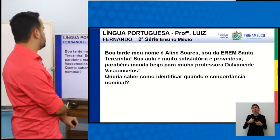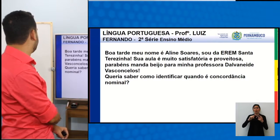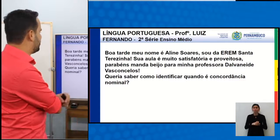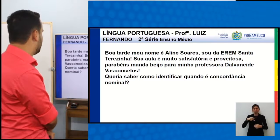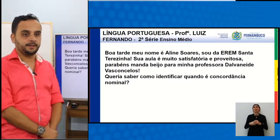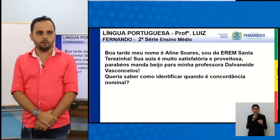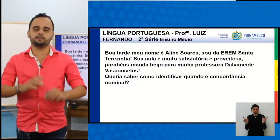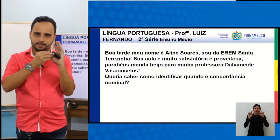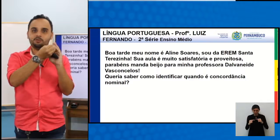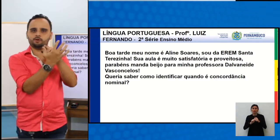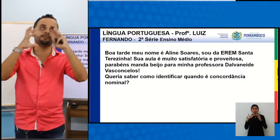Aline Soares, da Eren Santa Terezinha — sua aula é muito satisfatória e proveitosa — quer saber como identificar quando é concordância nominal. A concordância nominal se manifesta quando todas as classes gramaticais nominais concordam com o substantivo: adjetivo, pronome, numeral e artigo — todas concordam com o nome, com o substantivo. Essa é a regra principal. A concordância verbal é o verbo concordando com o sujeito.